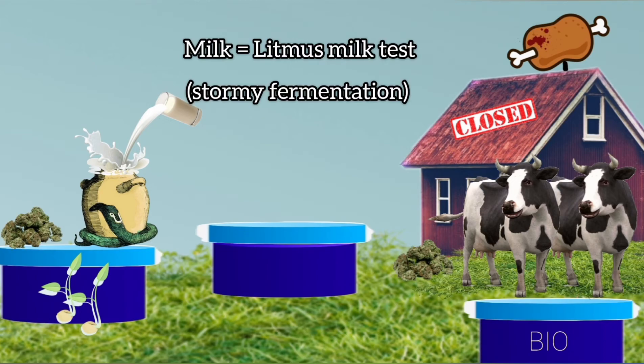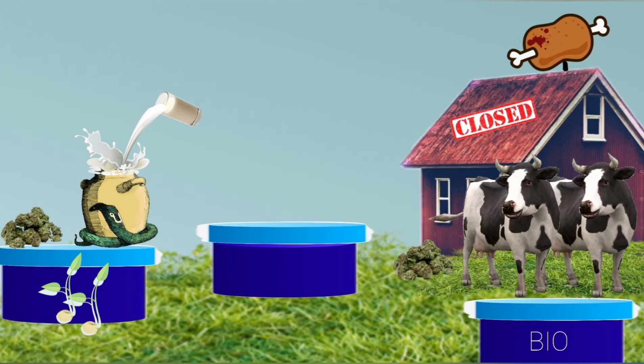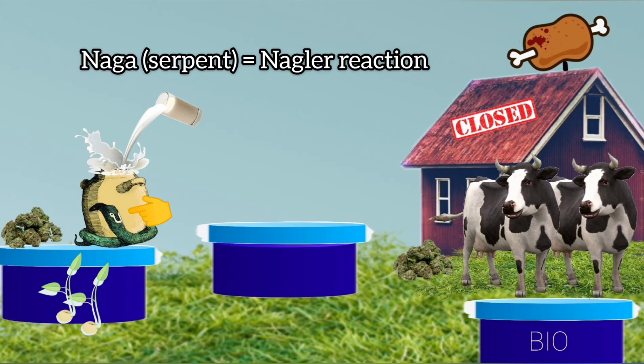So the milk tumbler signifies litmus milk test, which is a biochemical reaction used for identification of Clostridium welchii. In litmus milk test, Clostridium welchii produces stormy fermentation. Around the tumbler you can see a Nagler serpent, which signifies Nagler reaction, which is another test used for identification of Clostridium welchii.